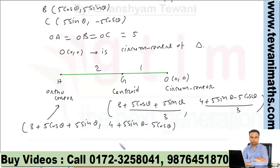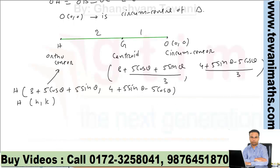When the circumcenter of a triangle is at the origin, we can directly take the orthocenter coordinates as the sum of the vertices' coordinates. Now we have to find the locus of this orthocenter. Suppose this point is (h, k), then we compare the x and y coordinates.